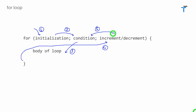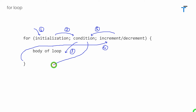After increment and decrement, again it will check the condition. If it is true, again it will execute the body of the loop. So steps three, four, and five keep continuing as long as the condition is true. But when the condition becomes false — that is step number six — control will jump out of the loop body.